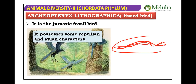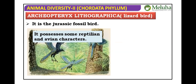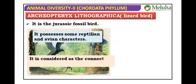Archaeopteryx lithographica is an important extinct example — considered a Jurassic fossil bird. It had both reptilian and avian characters, making it a connecting link between reptiles and birds. The name 'lithographica' comes from litho (stone/soil) and graphica (line) — it was found as a line-like fossil in Bavaria, Germany. Its dual characters support the theory that birds evolved from reptiles.